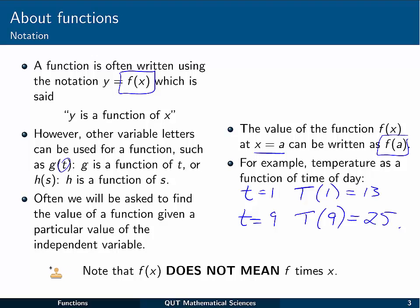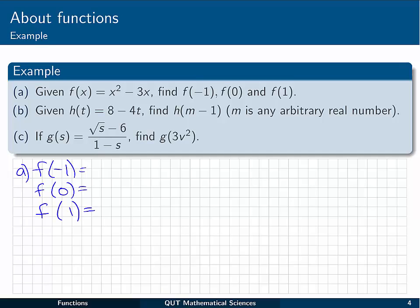Now something important to note is that when we have f of x, that doesn't mean f times x, even though it kind of looks like it. Whenever we see f and then the brackets of x, in this sort of context, we're saying a function and its independent variable is x. Let's have a look at a couple of examples of this.